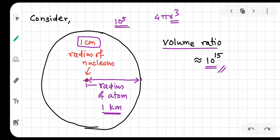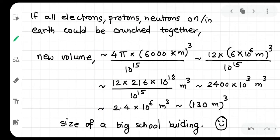I will tell you a small idea. Suppose we take the entire Earth - above earth, water, everything, every human being, all living people, everything in the earth - if electrons, protons and neutrons of earth could be crunched together, what is the new volume?